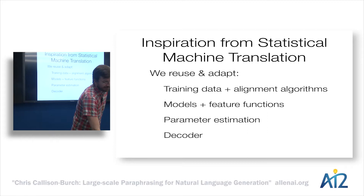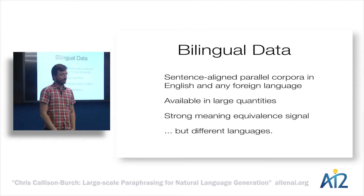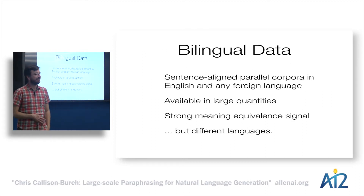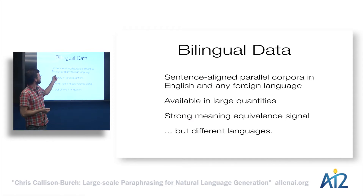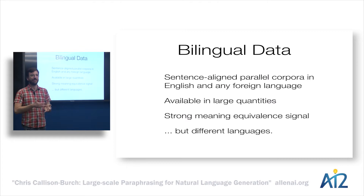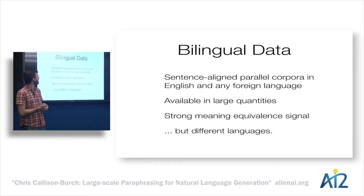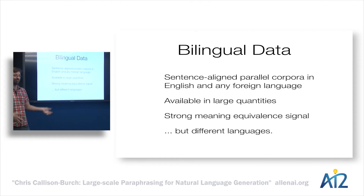In statistical machine translation, we have sentence-aligned parallel corpora, but unlike what we've looked at so far, these are now in different languages — a French sentence aligned with an English sentence. The great thing is that they're available in abundant quantities and they provide a strong meaning-equivalent signal, but of course they're in different languages.